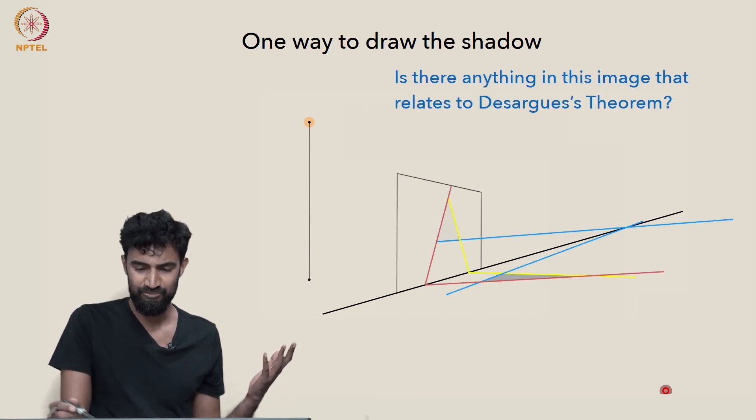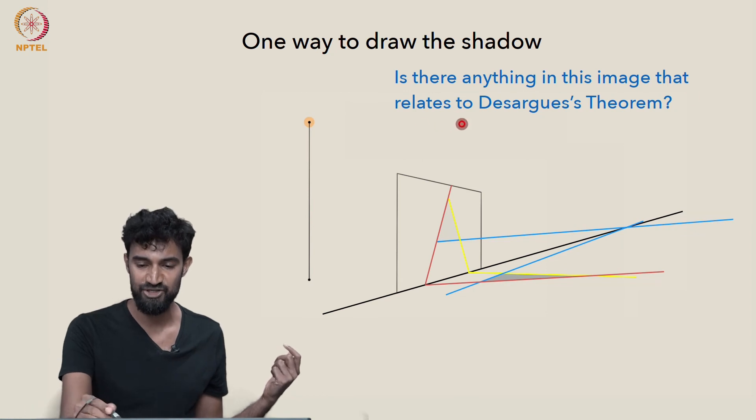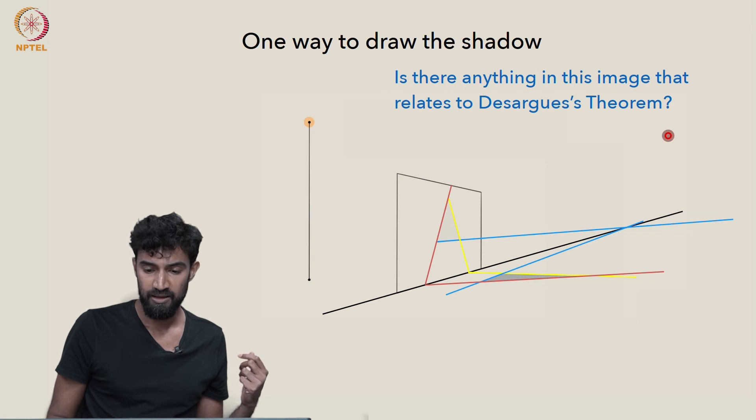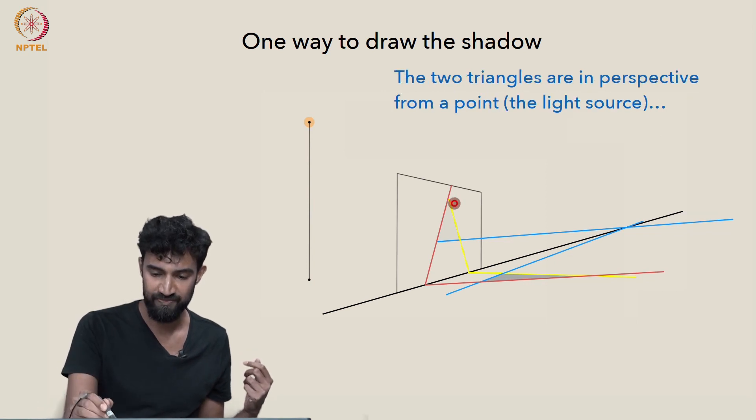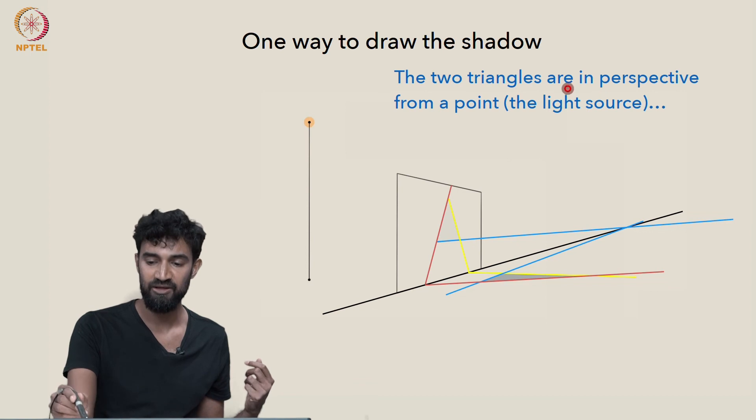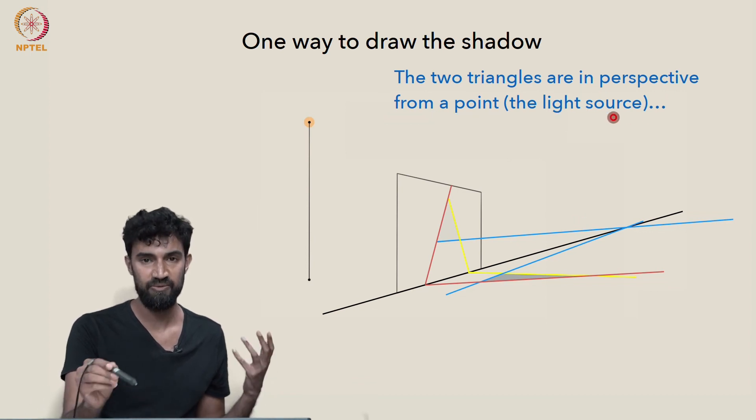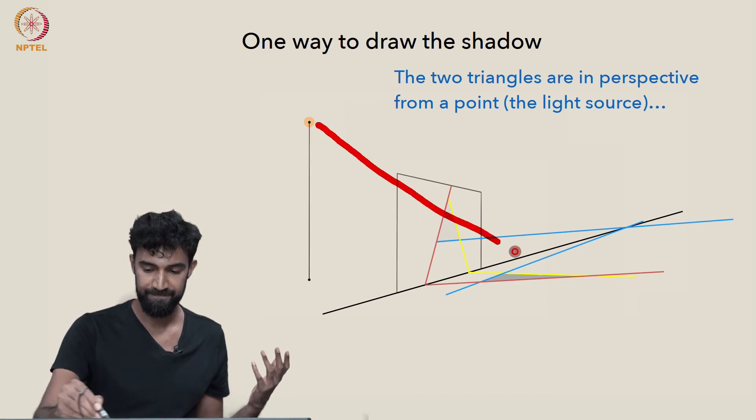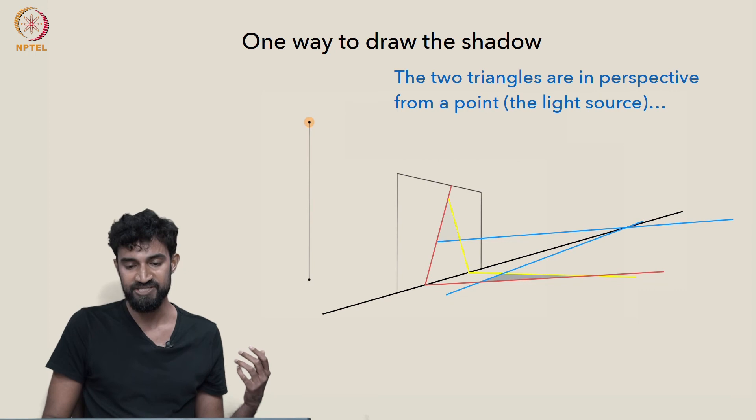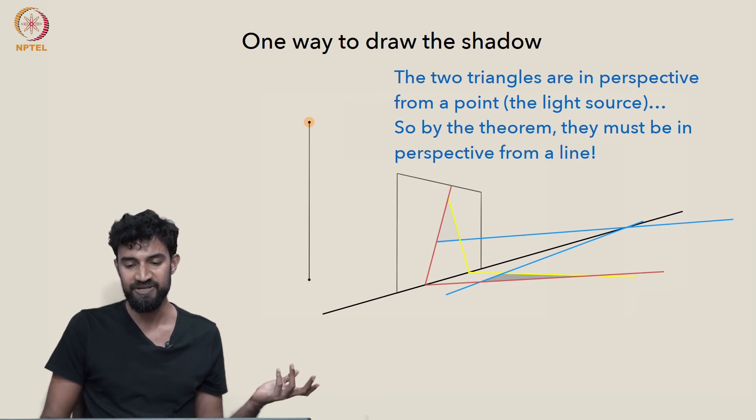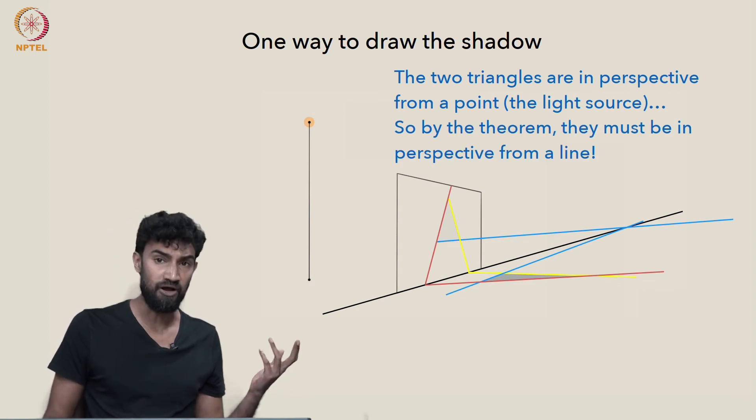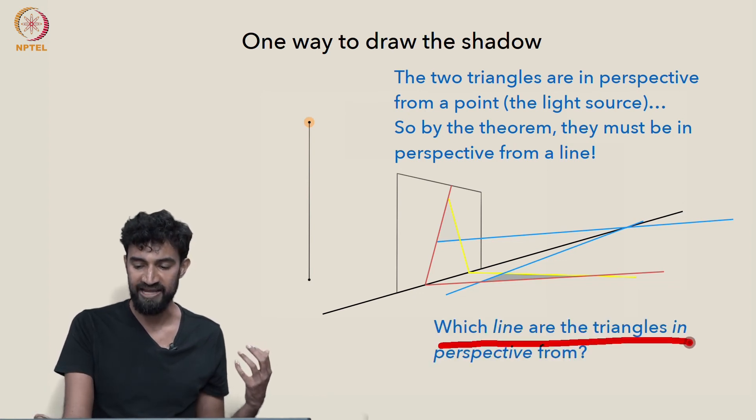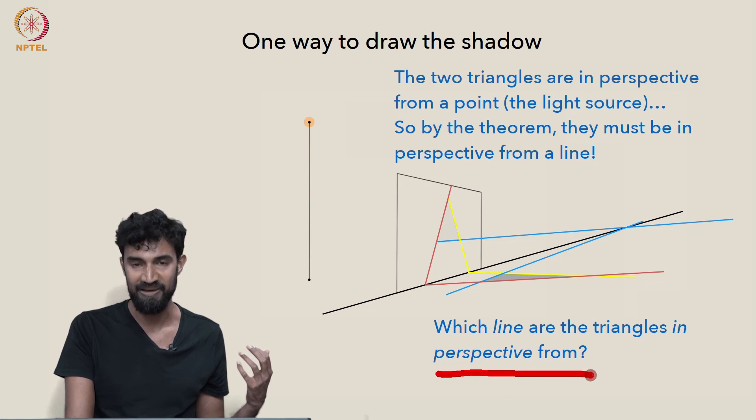So I just want to bring back some of these lines and ask, is there anything in this image that relates to Desargues' theorem? The two triangles, the shadow triangle and the actual triangle, are in perspective from a point. They're in perspective from this light source. So by Desargues' theorem, they must be in perspective from a line somewhere. So which line are the triangles in perspective from?